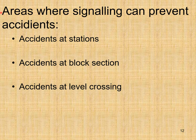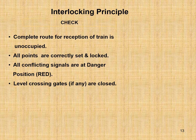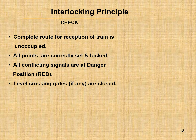Areas where signaling can prevent accidents include: accidents at stations, accidents at block sections, and accidents at level crossings. The interlocking principle requires: checking that the complete route for reception of the train is unoccupied; ensuring all points are correctly set and locked; all conflicting signals are at danger position with red light showing; and level crossing gates, if any, are closed.